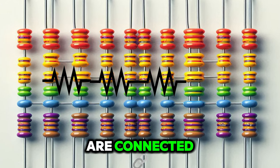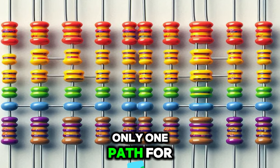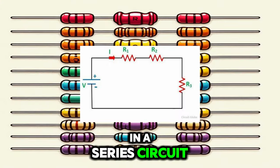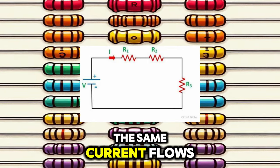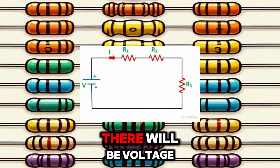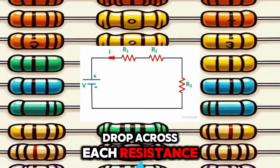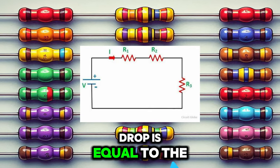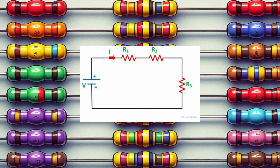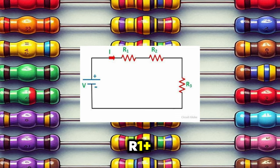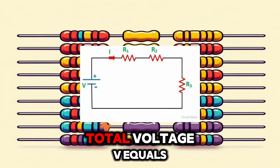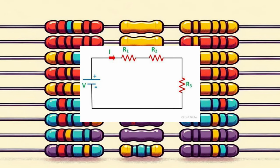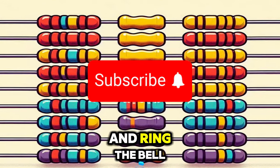Resistance in series: a circuit in which resistances are connected end to end so that there is only one path for current flow is called a series circuit. In a series circuit, the same current flows through all the resistances. There will be a voltage drop across each resistance given by Ohm's law. The sum of the voltage drops equals the applied voltage. Total R equals R1 plus R2 plus R3; total voltage V equals V1 plus V2 plus V3.